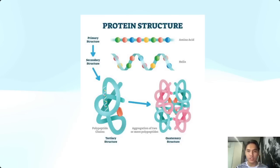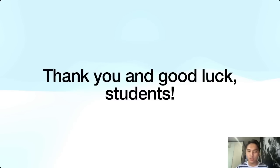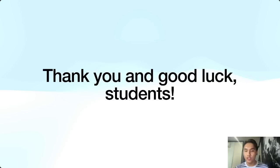Those are the four protein structures: primary structure is the chain of amino acids; secondary structure is alpha helix or beta pleated sheet; tertiary structure is the 3D conformation of the secondary structure; and quaternary structure is the aggregation of two or more polypeptide chains. I hope you learned a lot during this lesson. Study well, and your future self will thank you — in your board exams and med school. Good luck, everyone. Thank you for listening, and stay safe and healthy.